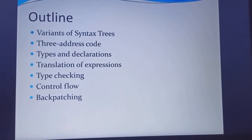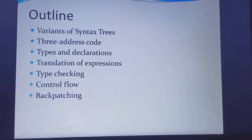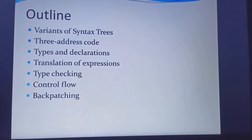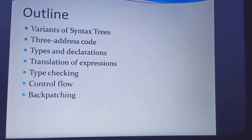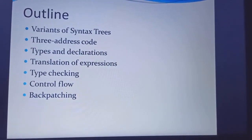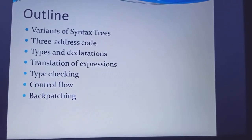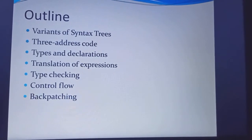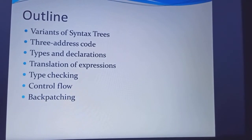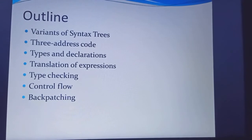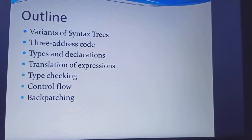In this intermediate code generation, we are going to generate a 3-address code. The main outline of this topic includes variants of syntax tree, 3-address code, types and declarations, translation of expressions, type checking, control flow, and back patching.